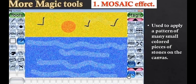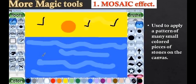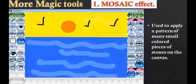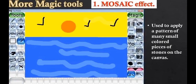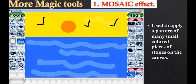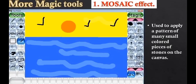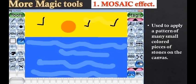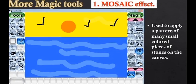All you have to do is first draw a normal colored drawing just like this. Then from the toolbar, select the Magic option. Then in Magic tools, choose Mosaic effect. Here's that mosaic effect.